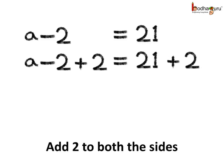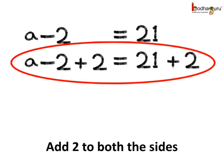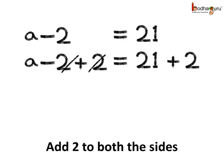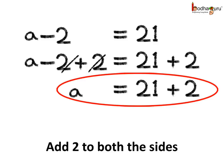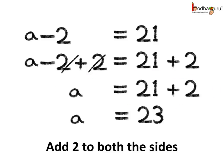So the equation becomes A minus 2 plus 2 is equal to 21 plus 2. Now on the right side minus 2 and 2 cancel out each other as minus 2 plus 2 is equal to 0. Thus A is equal to 21 plus 2, which is equal to 23.